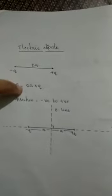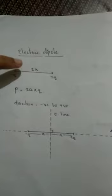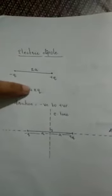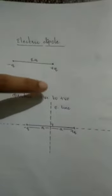Electric dipole: two equal and opposite charges separated by a small distance is called the electric dipole. So p is equal to 2a into q. Here p is the product of the magnitude of the charge and the distance separating the charges, so p equals 2a into q. The direction of the electric dipole is from negative to positive.